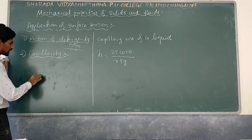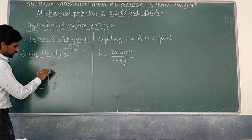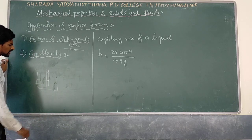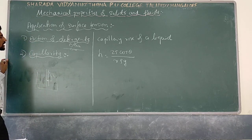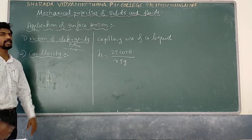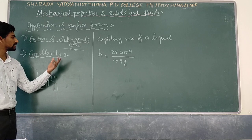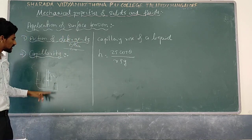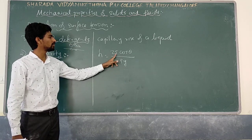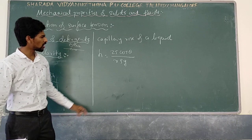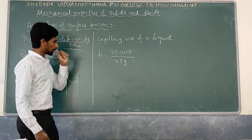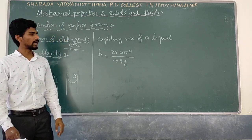Capillarity: when a thin tube is placed in a liquid, the liquid level inside rises — this is called capillary rise. For example, oil in a wick rises because of capillarity. In trees, water travels from roots to different parts of the plant because of capillarity and surface tension. The height of capillary rise is given by h = 2T cosθ / (r × rho × g), where T is surface tension, theta is the angle of contact, r is the radius of the tube, rho is the density of the liquid, and g is acceleration due to gravity.